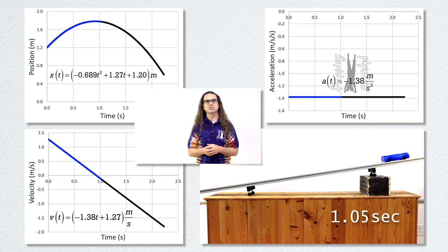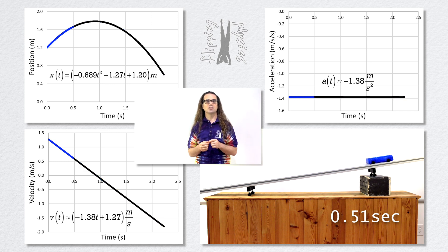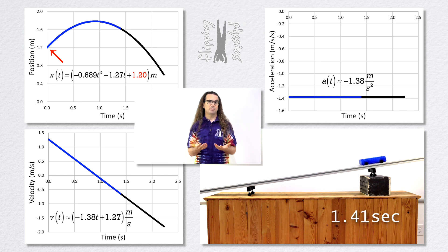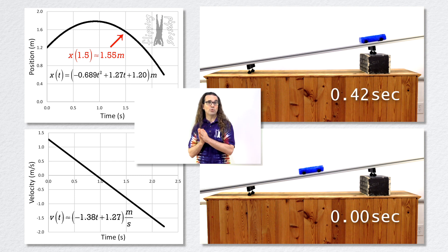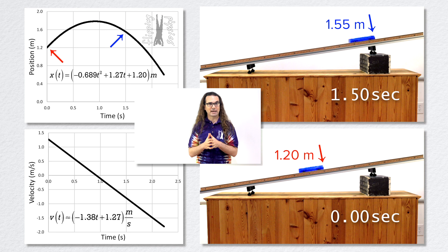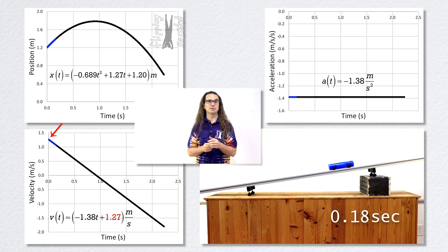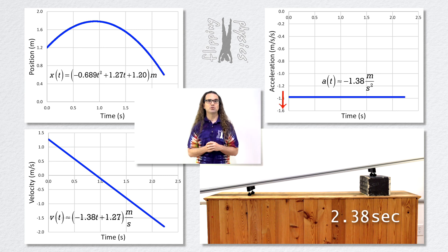Let's add graphs of these functions to see the motion of the cart. On the position as a function of time graph, you can see the initial position equals 1.20 meters and the position after 1.50 seconds equals 1.55 meters — those are real positions of the cart at those times. On the velocity as a function of time graph, the initial velocity equals 1.27 meters per second and the velocity after 1.50 seconds equals negative 0.797 meters per second. On the acceleration as a function of time graph, the acceleration is constant at negative 1.38 meters per second squared.